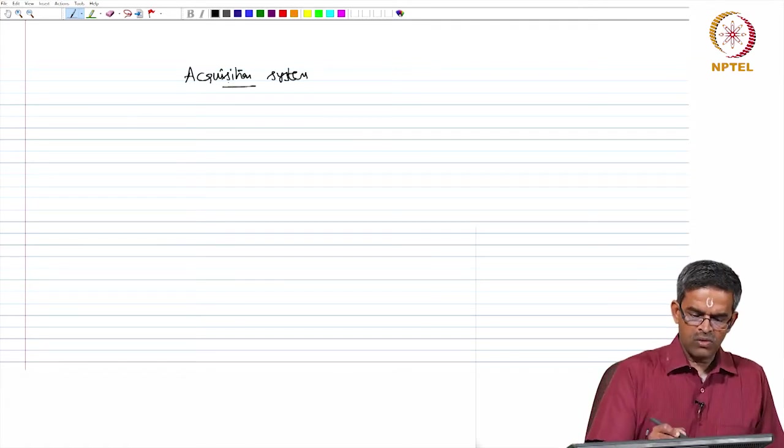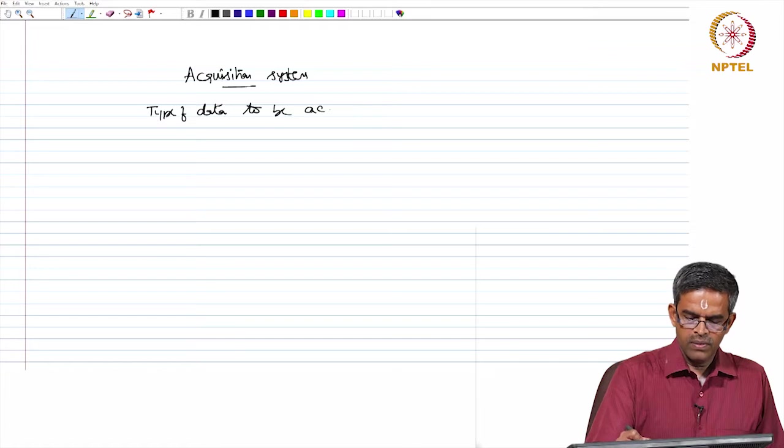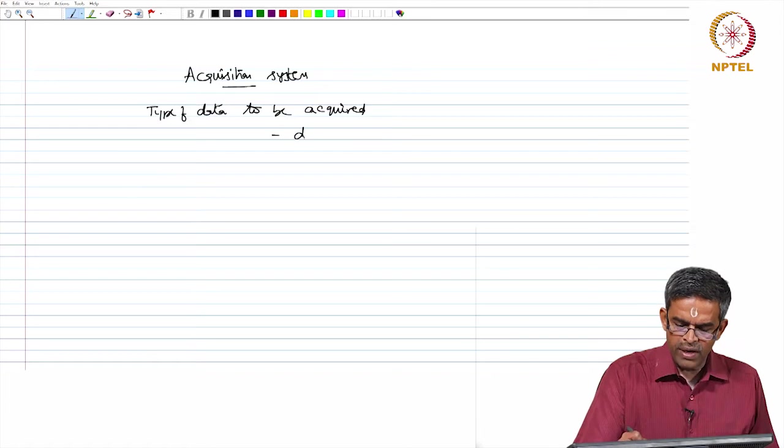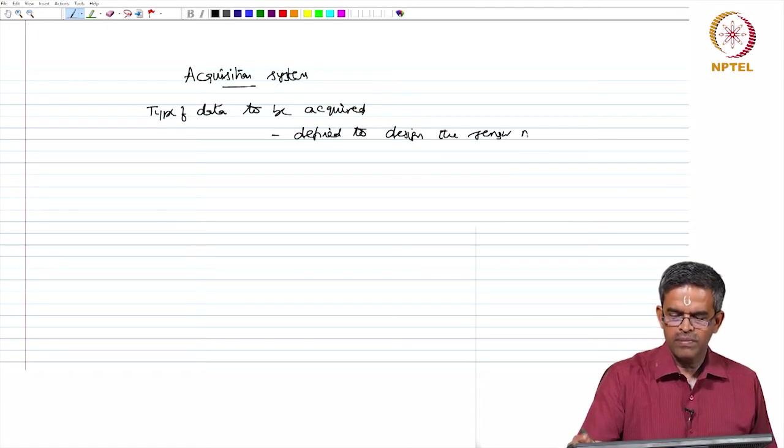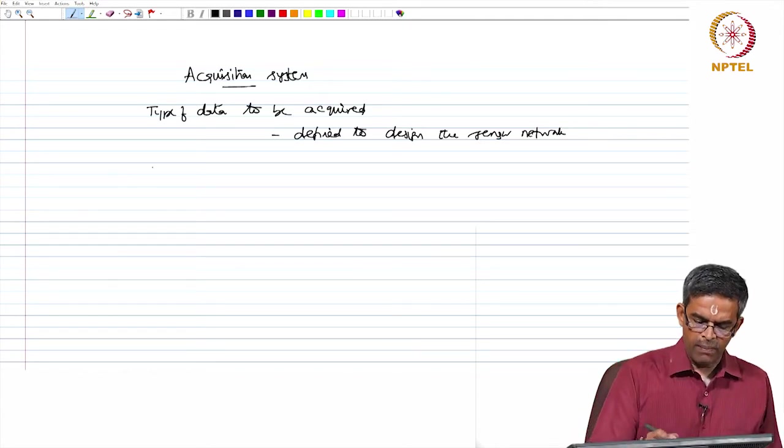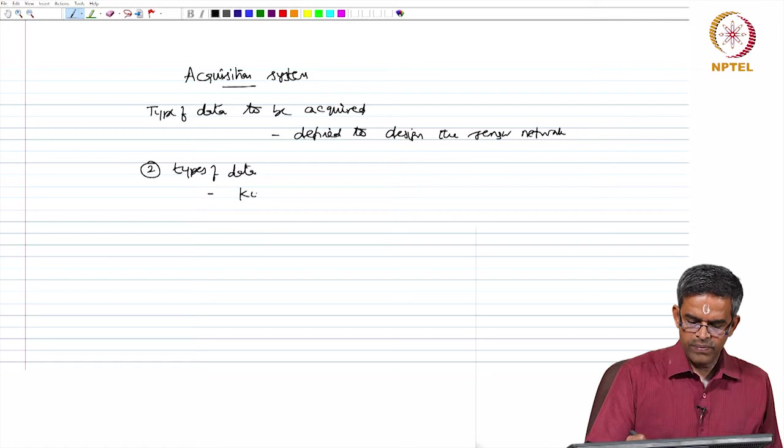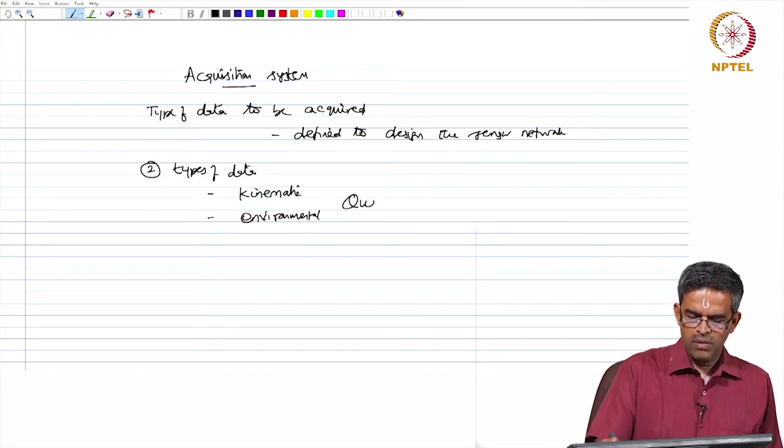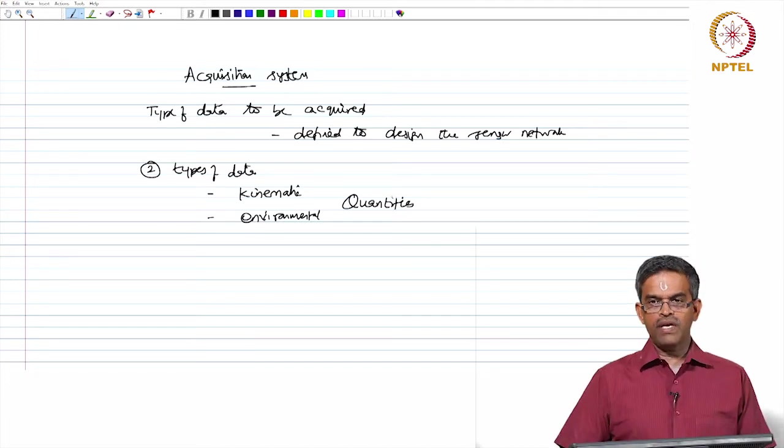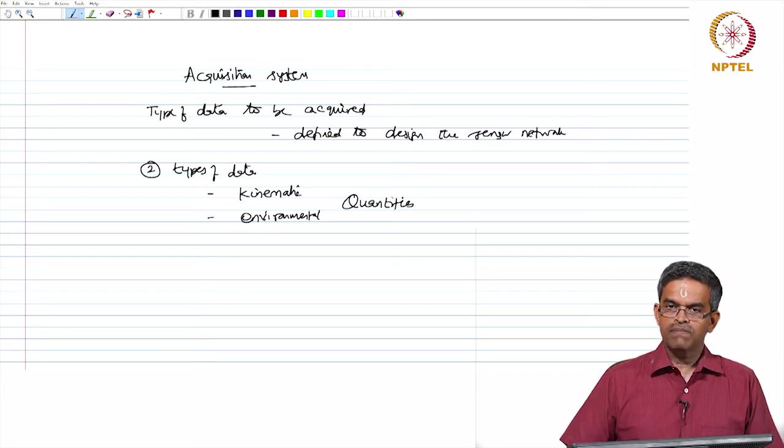Now, the acquisition system depends on the type of data to be handled. This should be defined to design the sensing network system. There are two types of data mainly: one is kinematic and other is environmental quantities. How do we separate this kind of data, what are the acquisition management to be done for acquiring these kinds of data, and how sensors can be deployed to collect these data in a careful manner and how they can be laid in the network?